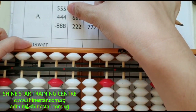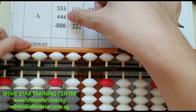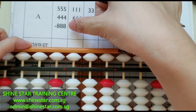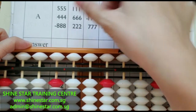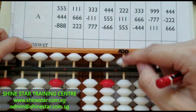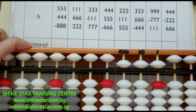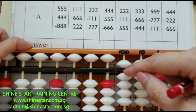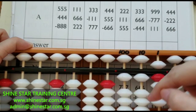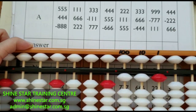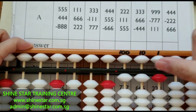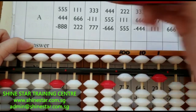555 plus 444 minus 888. The answer is 111.